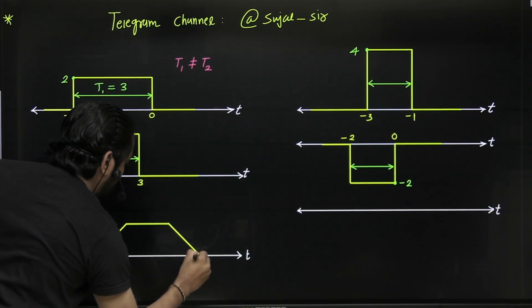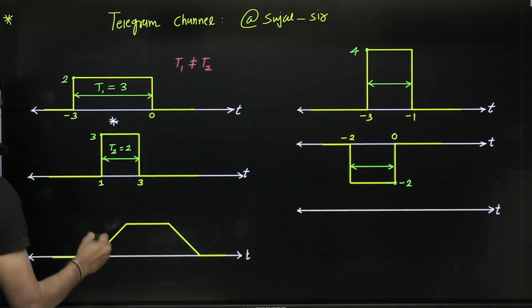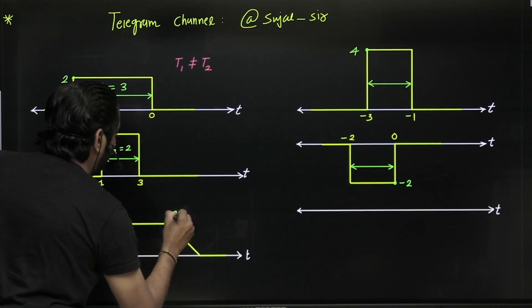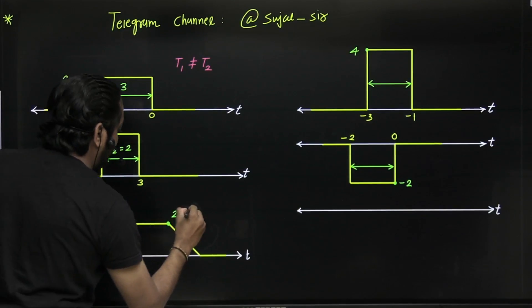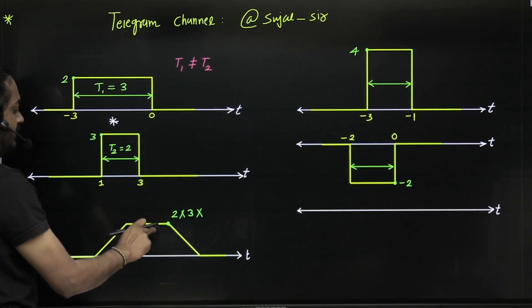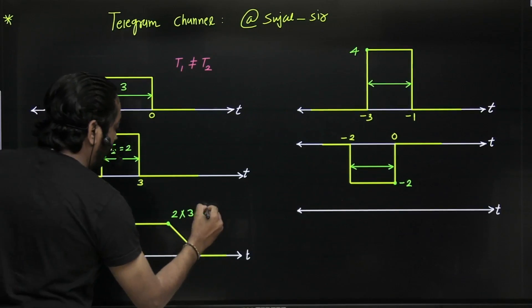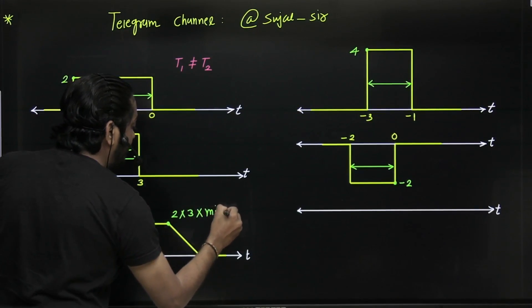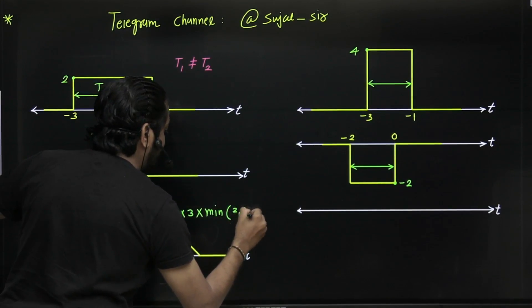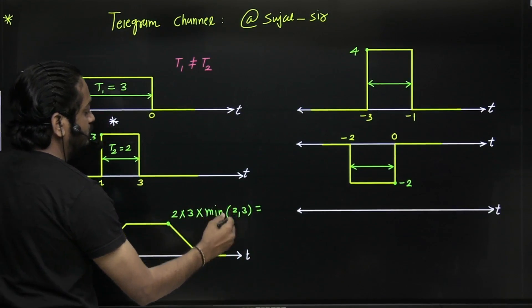The peak amplitude of the resultant trapezoidal signal equals the amplitude of the first signal multiplied by the amplitude of the second signal, multiplied by the minimum of t1 and t2. So here, amplitude one is 2, amplitude two is 3, and the minimum of t1=2 and t2=3 is 2.